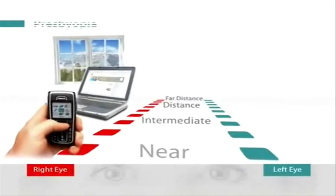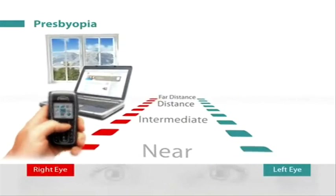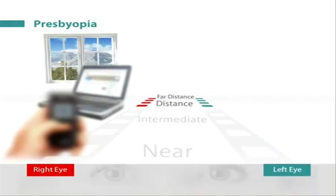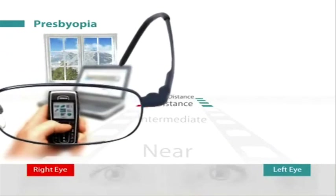In presbyopia, the loss of accommodation means that the near vision in both eyes becomes blurred, leaving the patient needing reading glasses.